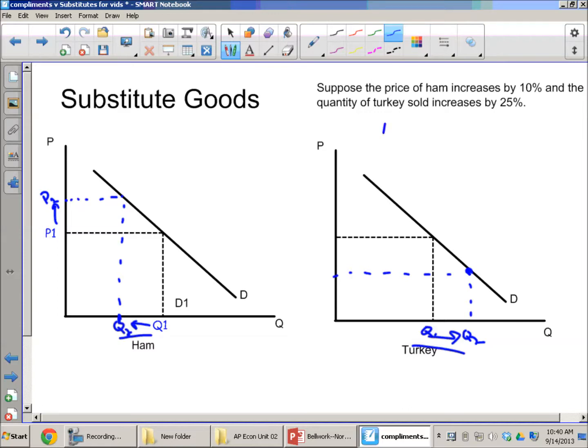The cross price elasticity is going to be equal to the percentage change in quantity—so that's going to be turkey in this case, I'll put a T for that—divided by the percentage change in the price of ham. And in this case that would be equal to 25% divided by 10%.